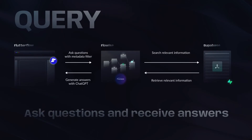Once we have upserted our document or web content into our database, we need a way to ask questions, retrieve information, and formulate answers — we can call this the query step. Users will interact with the FlutterFlow frontend to ask a question through an API call to our FlowWise endpoint, which we specifically set up to handle queries. Our FlowWise query chatflow would then retrieve information and generate a response, which we serve back to our users as a message on the FlutterFlow frontend.